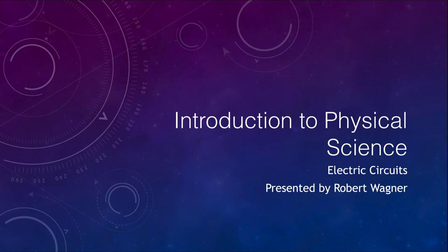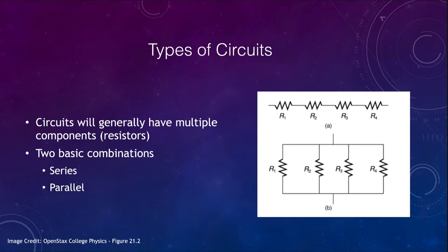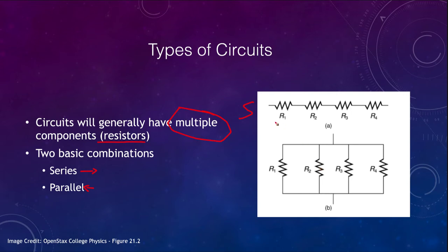There are generally two types of circuits that we're going to be concerned with. A circuit will generally have multiple components which are resistors — they could be various things from actual resistors to light bulbs — something that uses the energy. At the top we have series where everything is in one line, and at the bottom we have parallel where they are all connected across each other but not directly connected to each other. The resistances combine differently in each type.